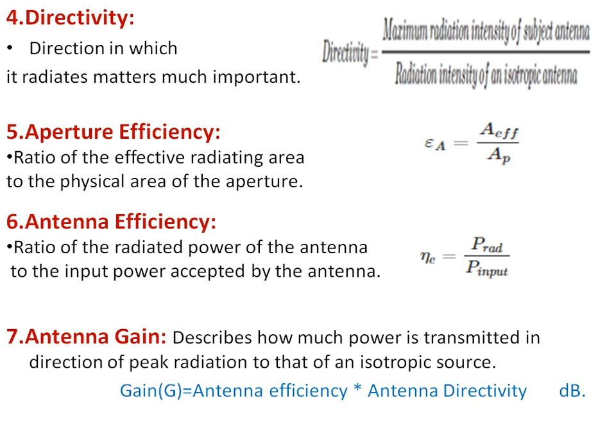The next is aperture efficiency. We have seen the aperture antennas — aperture efficiency is the ratio of effective radiating area to the physical area of the aperture. What is the physical size of that aperture and how effectively it is radiating through that aperture area is simply the aperture efficiency. Ideally it should be 1; it is the ratio of effective area of the antenna to the physical aperture area of that antenna. Obviously this efficiency should be high.